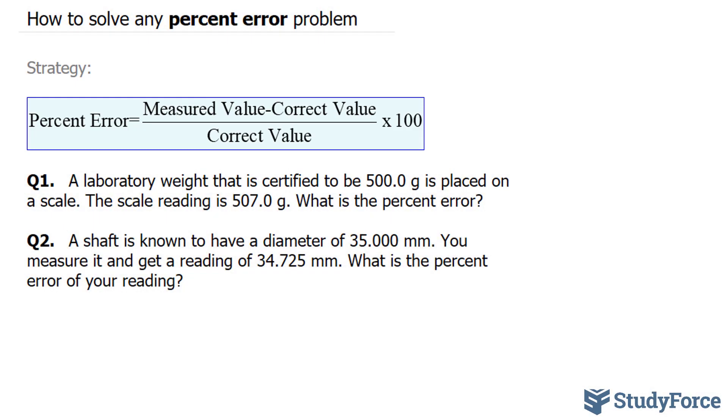The first question reads, a laboratory weight that is certified to be 500.4 grams is placed on a scale. The scale reading is 507.0 grams. What is the percent error? Now just be mindful that both of these numbers have four significant figures. So at the end, we should also have four.